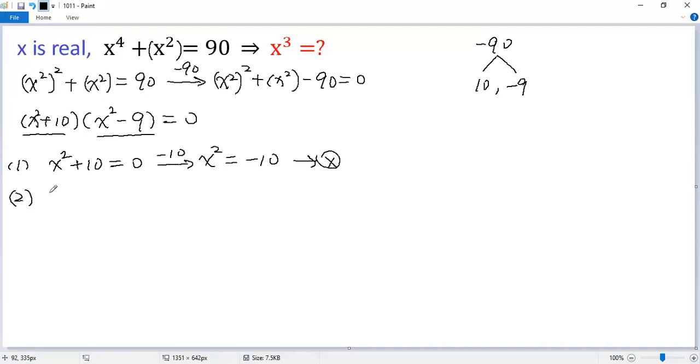If the second factor equals 0, we get x² - 9 = 0. Adding 9 to both sides,